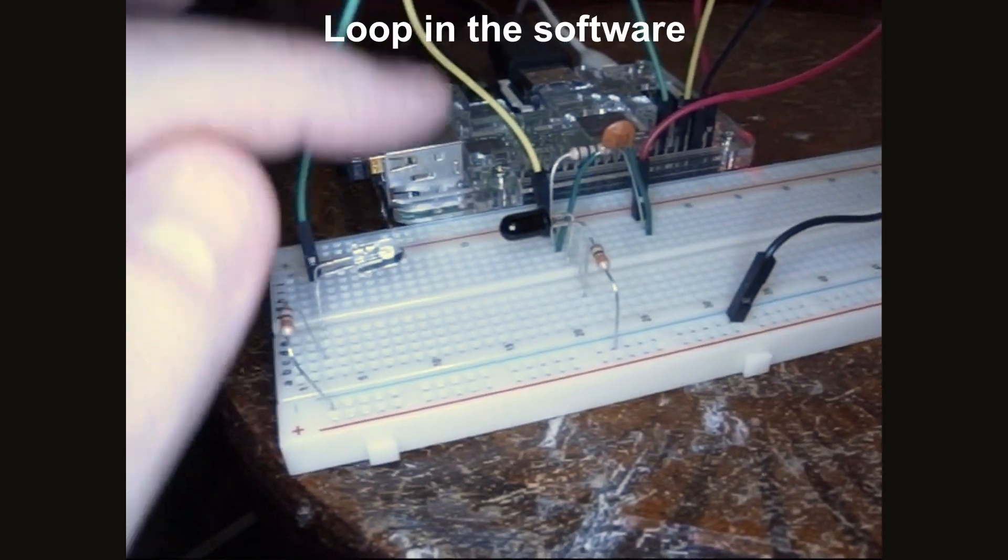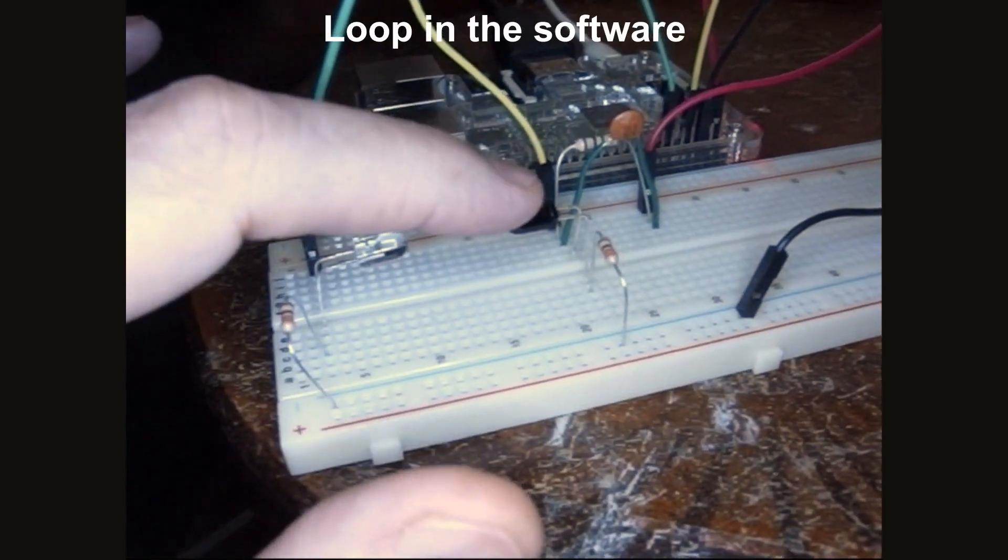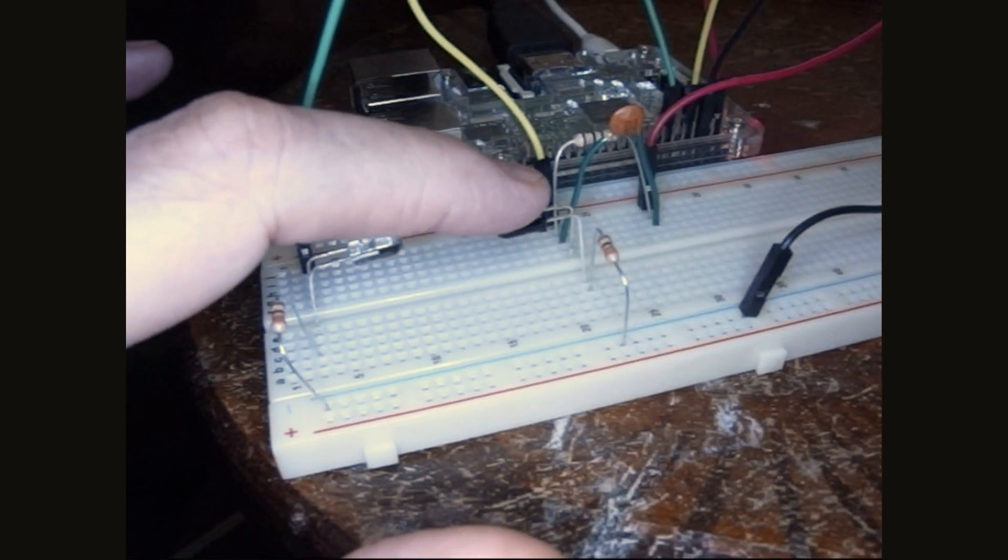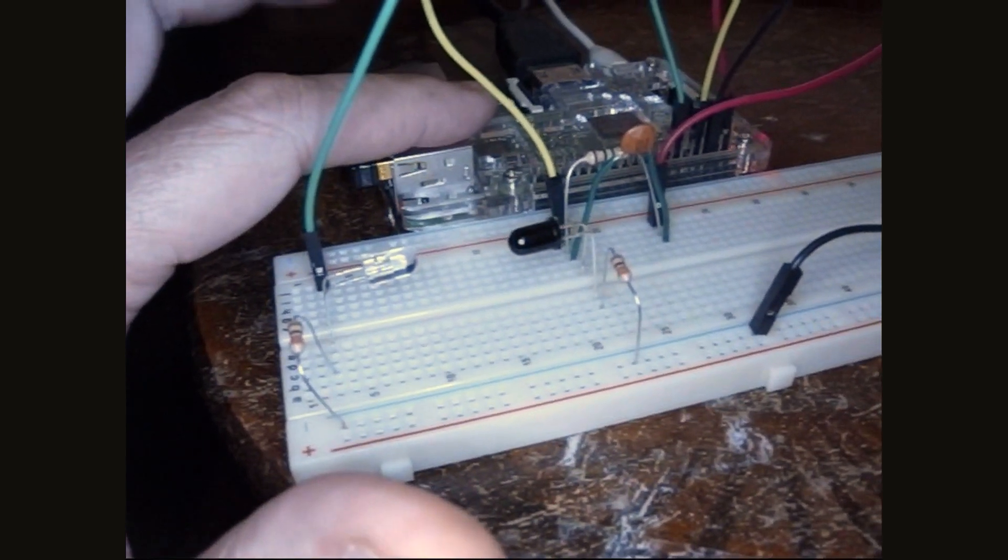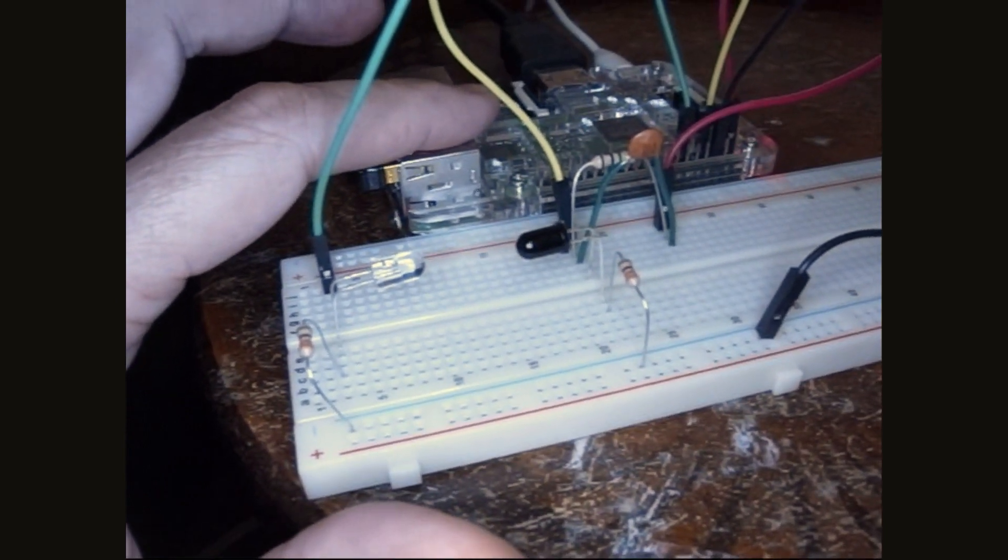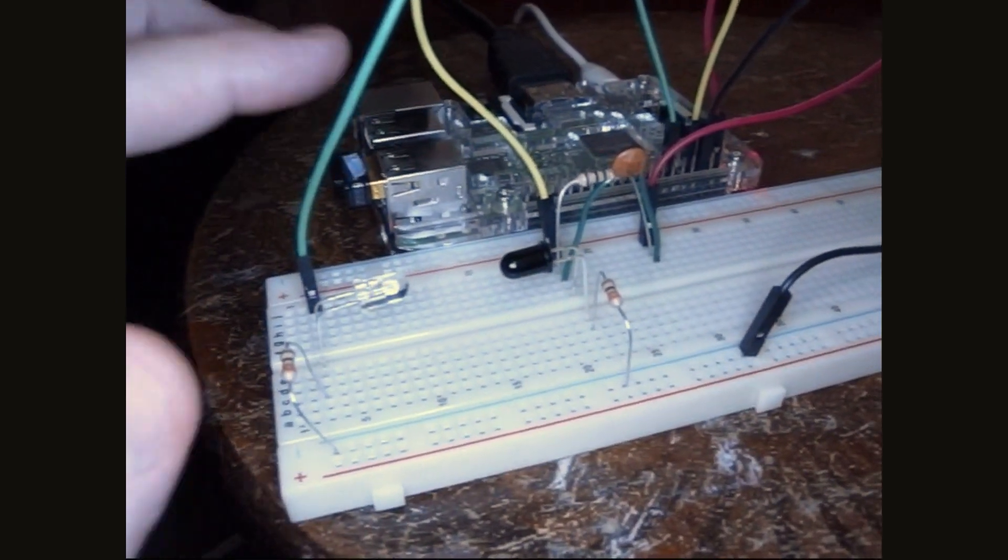This time around, I'm not going to use a loop. I just used a loop and determined what the value of the input was. That's kind of a slow thing, but it occupies pretty much the whole processor of the Pi. This time, we're going to use interrupts.